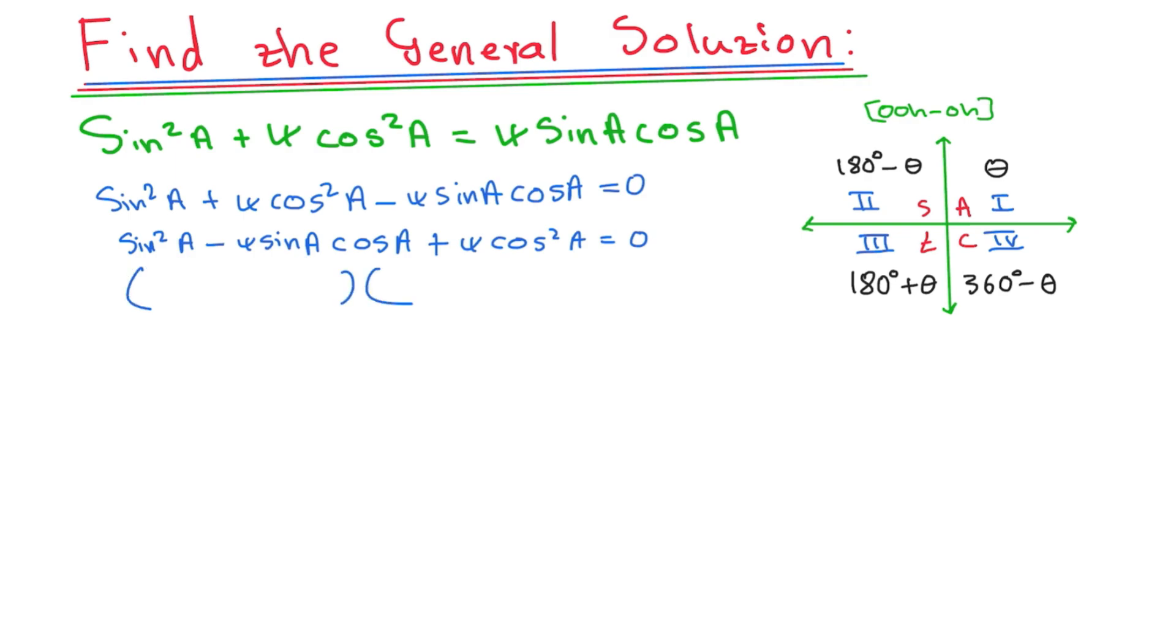So I'll have something like this and something like this and I'll say equals to 0. So factors of sin squared A will be sin A and sin A. And factors of 4 cos squared A will give me what? That's going to give me the 4 sin cos. It's going to give me what? 2 cos A and 2 cos A.